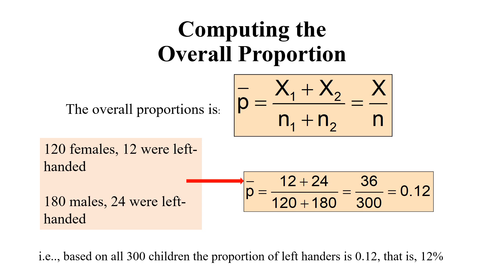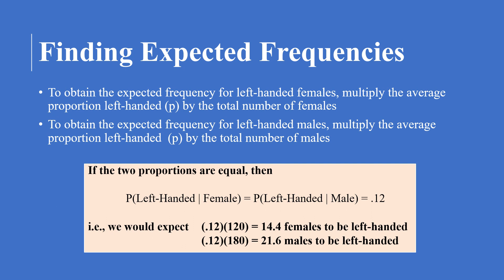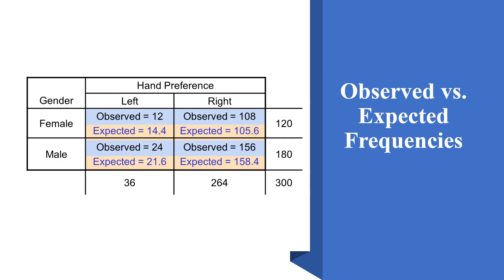Next, we find the expected frequencies for left-handers. To get the expected frequency for left-handed females, we multiply the average proportion left-handed (0.12) by the total number of females (120), giving 14.4. For males, we multiply 0.12 by 180, giving 21.6. We now have observed versus expected frequencies for left-handed and right-handed females and males.